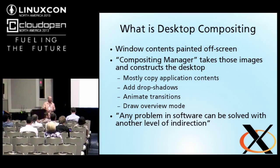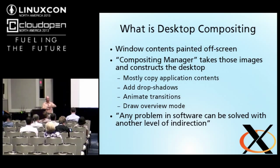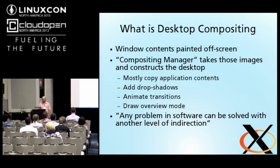Why do we do desktop compositing? We want to put pretty animations and effects on the screen and we want the screen to look nice. So we insert this additional level of indirection between the application and the screen so that we can have nice effects. The problem with another level of indirection is that it's going to have some expense.